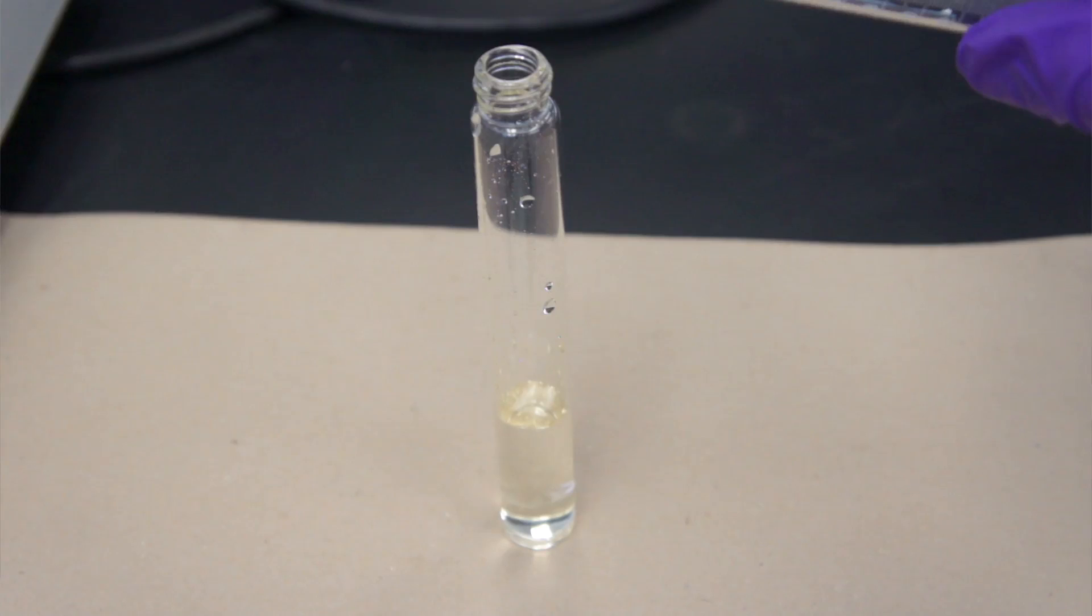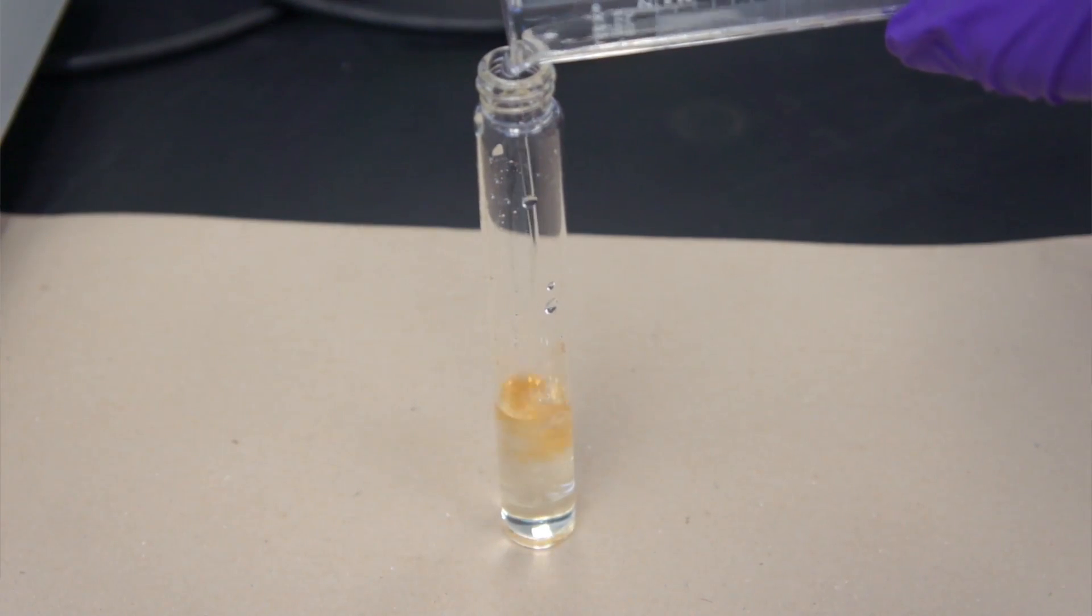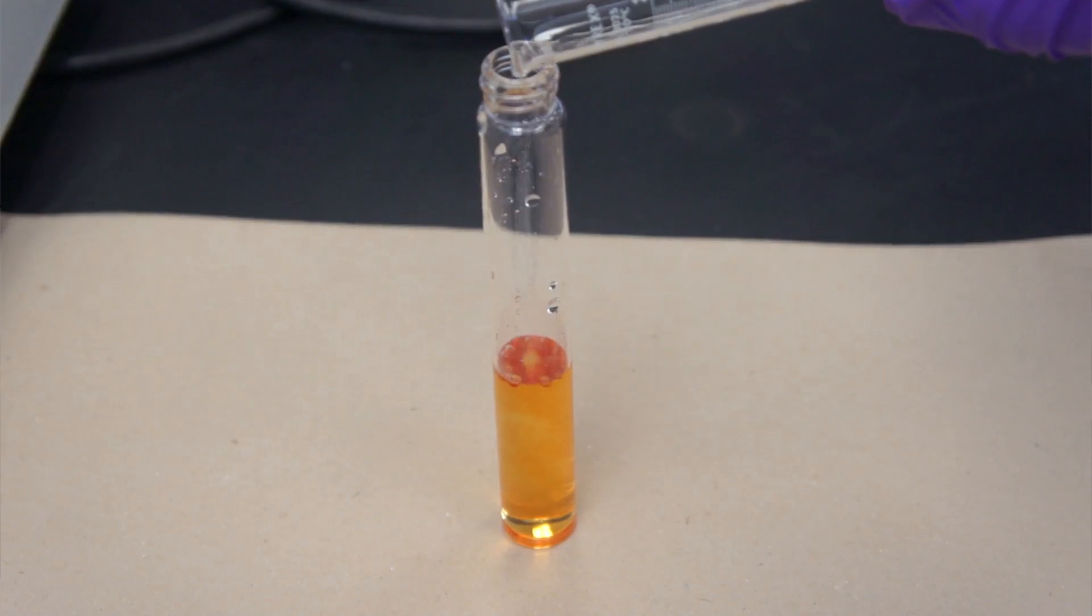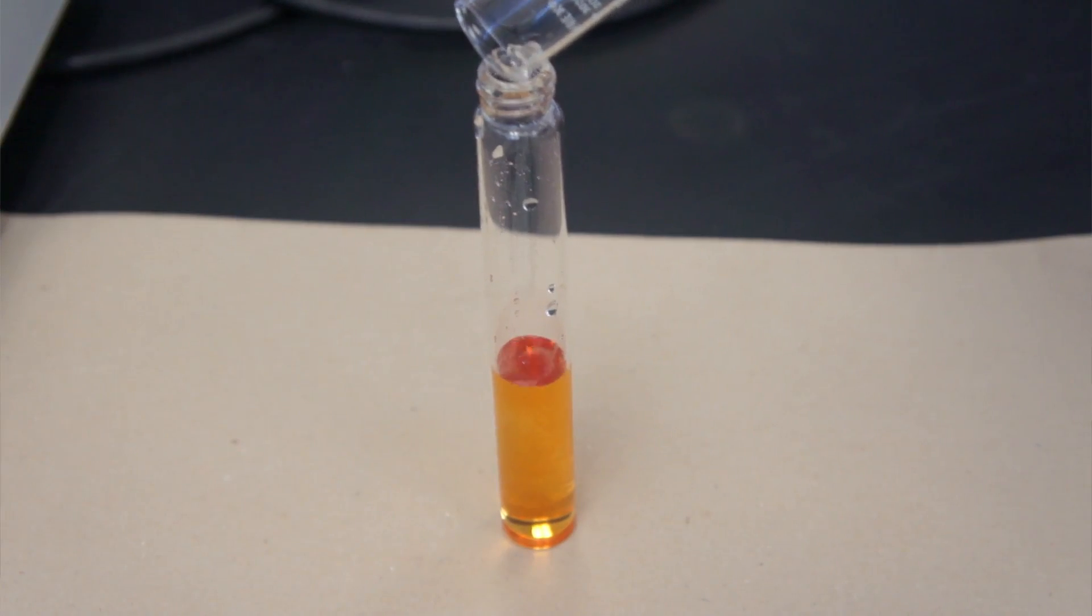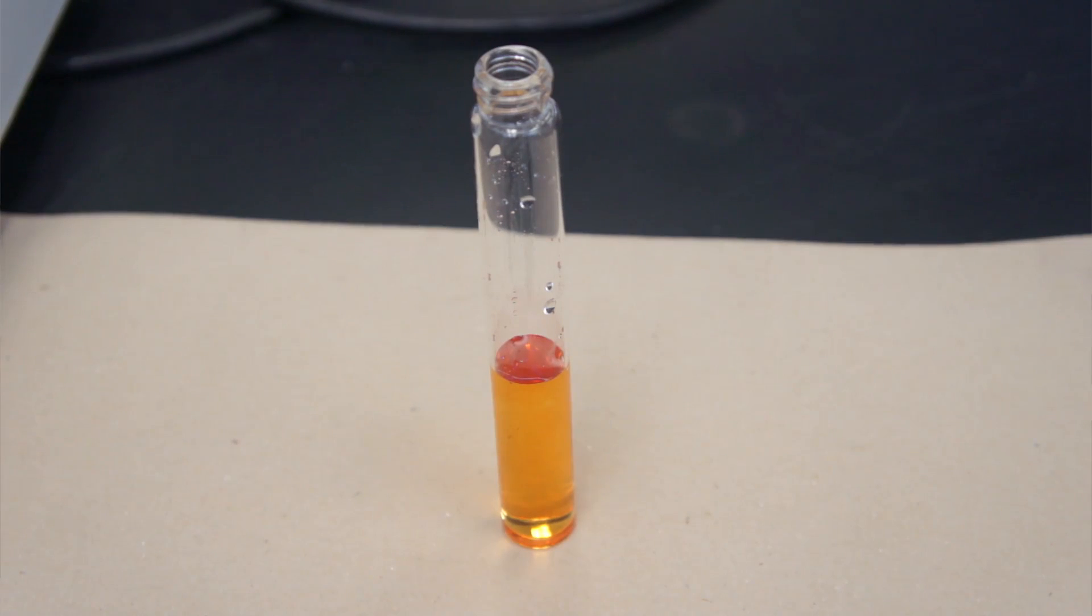Then you will add your thiocyanate solution to the tube. Right away, you will notice that the color of your tube or the solution will turn into a dark brown or orange.